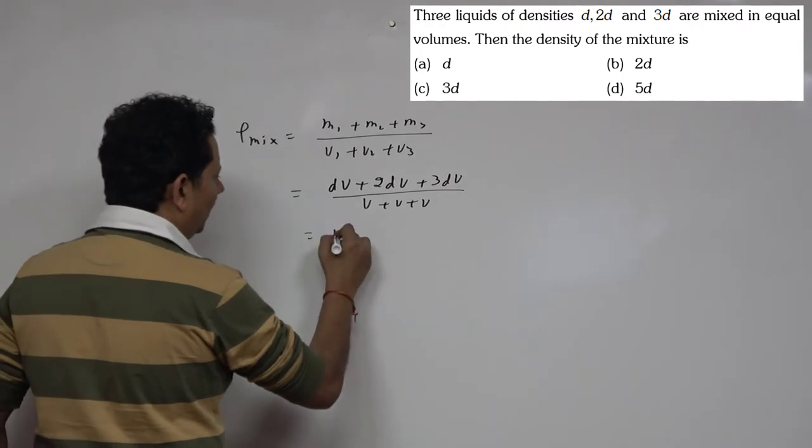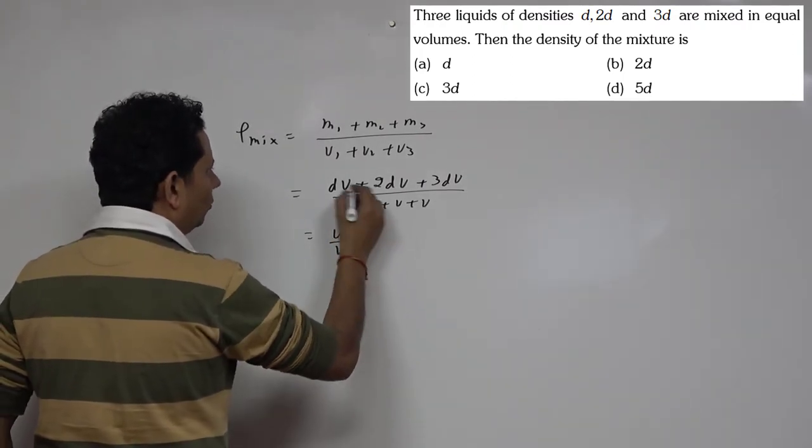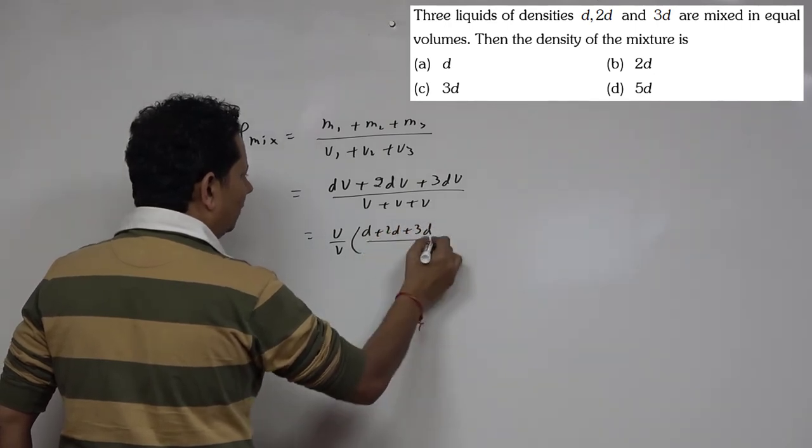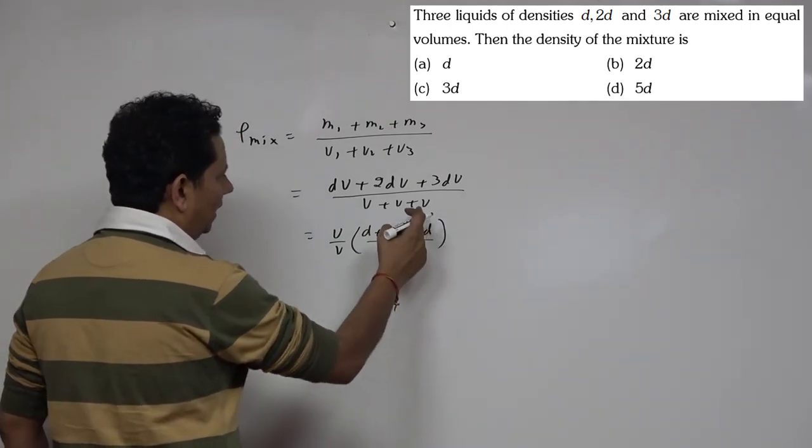In this, if we take v common from numerator and denominator, it will cancel. So v by v cancels, and we're left with d plus 2d plus 3d divided by 3.